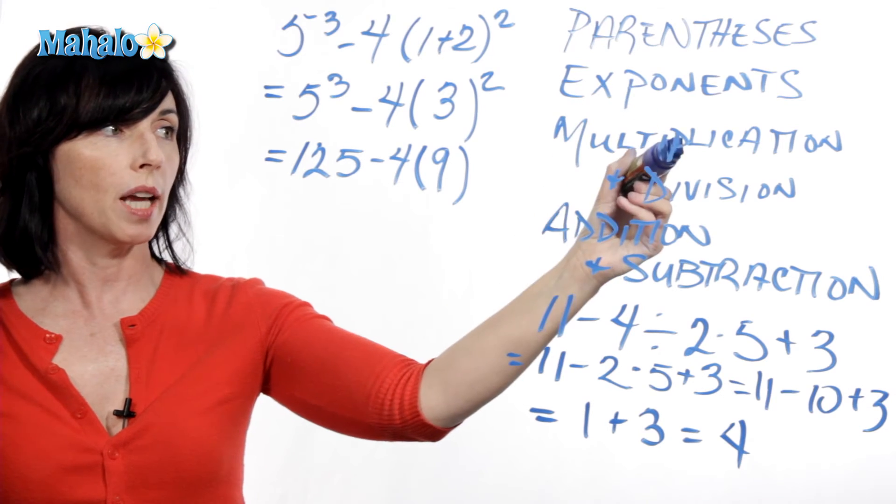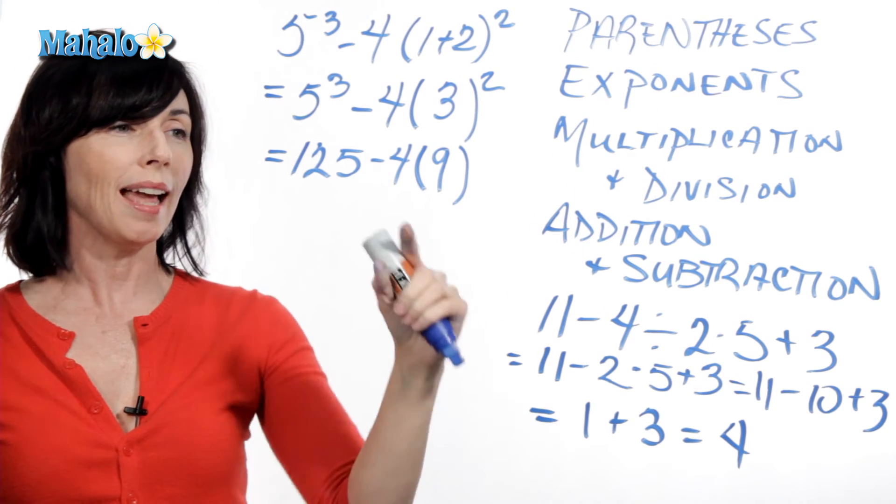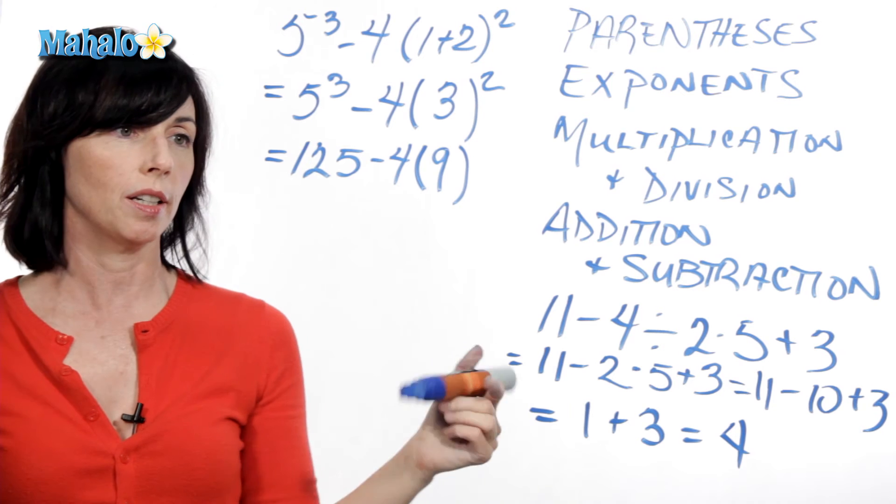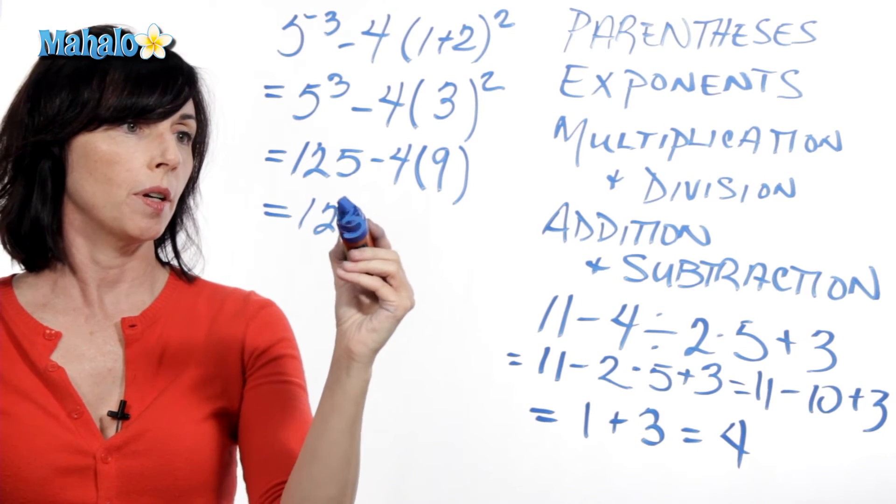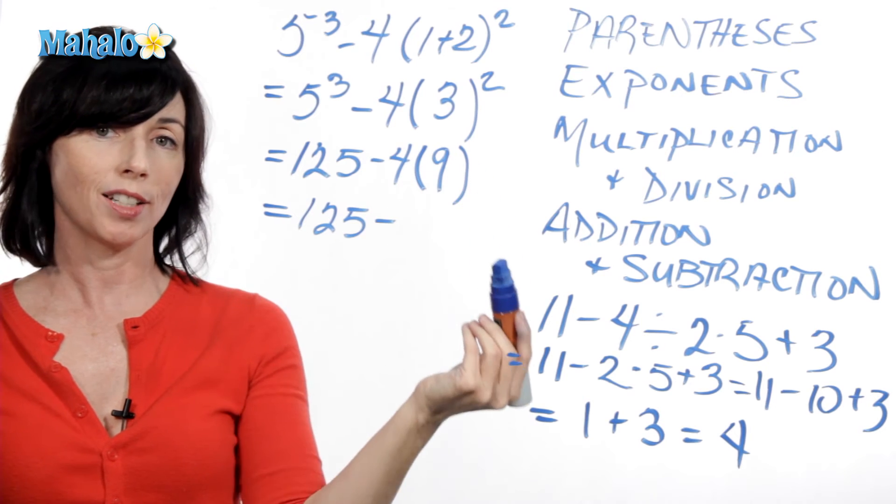So now we go down to multiplication and division from left to right. All I have is this one multiplication here. 125 minus 4 times 9 is 36.